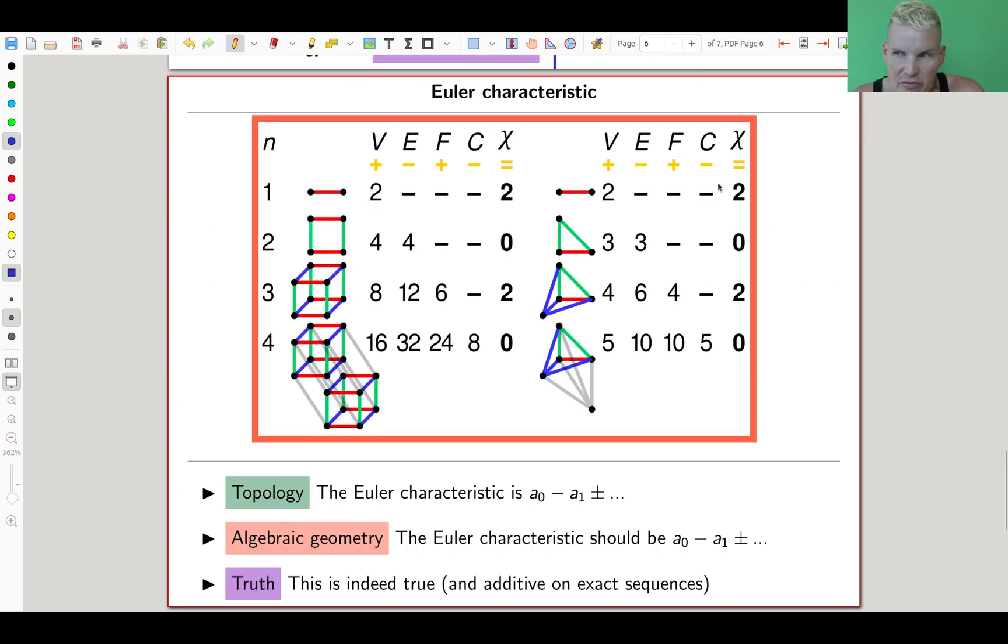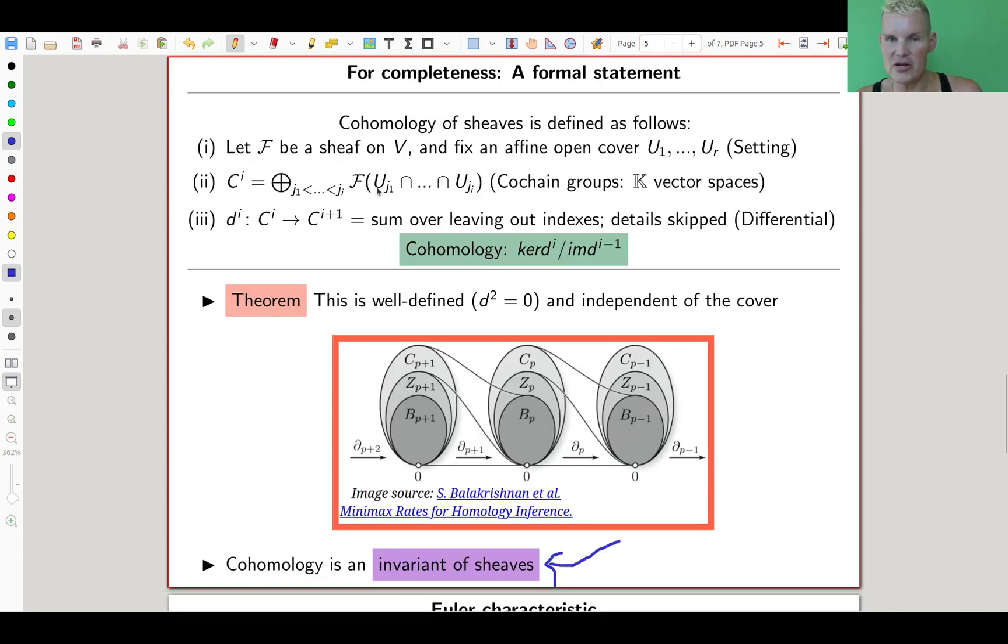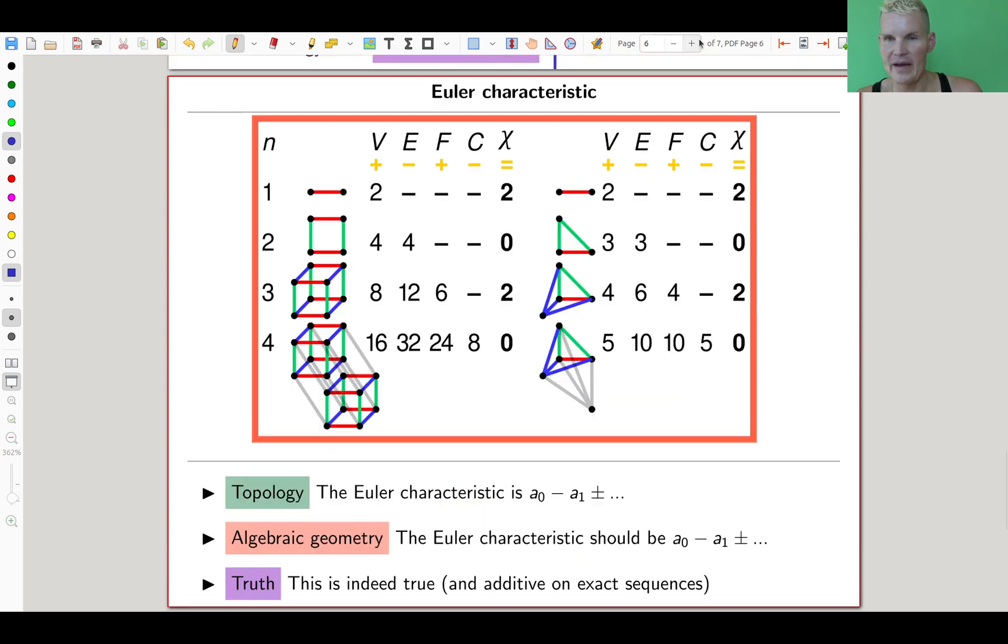What is a bit nicer to compute is the Euler characteristic, which is exactly like in topology. The Euler characteristic is the alternating sum of the a's in my notation. Whatever Euler characteristic of the cube, it has eight here, twelve here, six here. You can define that as an alternating sum of the a's or the alternating dimensions of the chain complex, so the size of the chain complexes, and it comes out as the same. The Euler characteristic here should be exactly the same, and yes indeed it is. It's additive on exact sequences, which makes it a bit nicer.